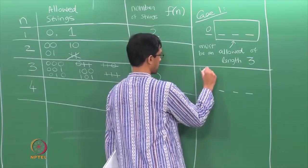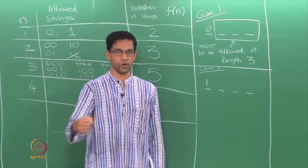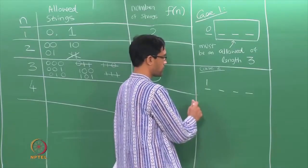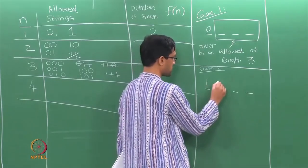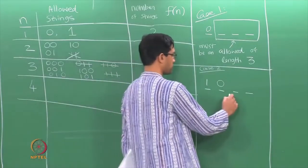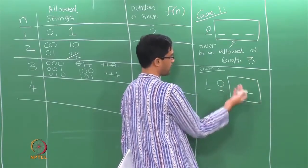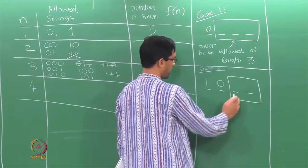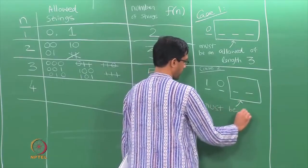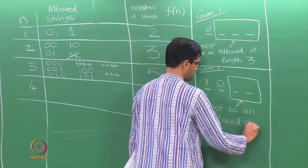Case 2: if the string starts with a 1, what can one say about what follows? The constraint says you cannot have 2 successive 1s, so since the first entry is a 1 the second entry had better be a 0. The first 2 entries are determined, and now that we have a 0, the next entry can be a 0 or a 1. So what follows these 2 must be an allowed string of length 2.